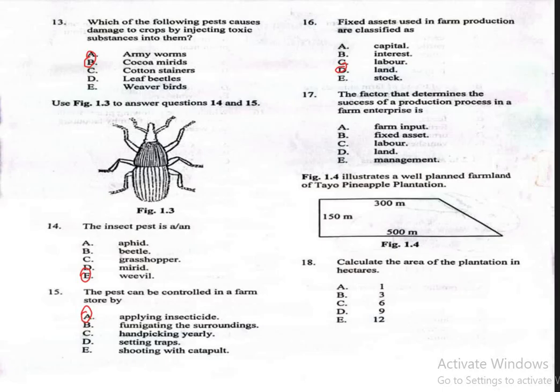Question 17. The factor that determines the success of a production process in a farm enterprise is: A. Farm input, B. Fixed assets, C. Labor, D. Land, E. Management. The correct answer is option E, which is management. Good management practices are crucial for the success of farm production.